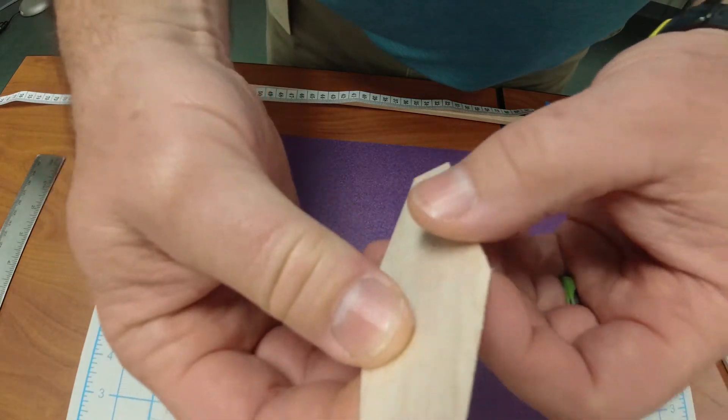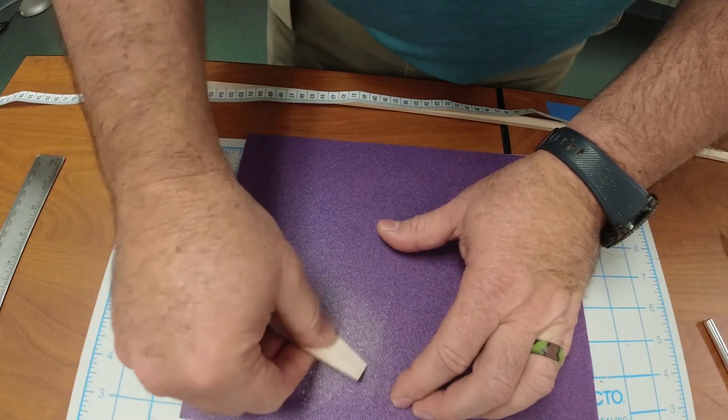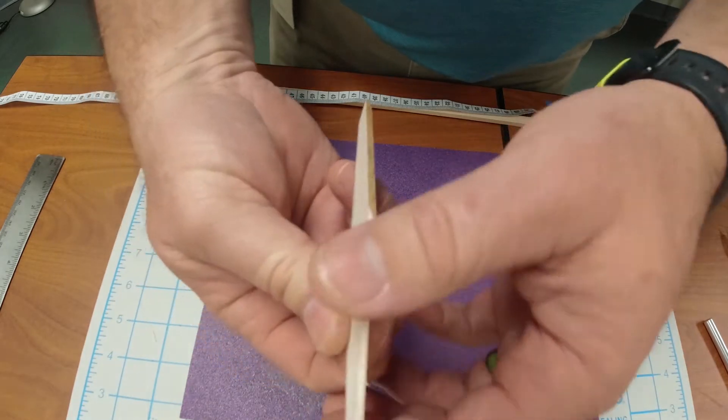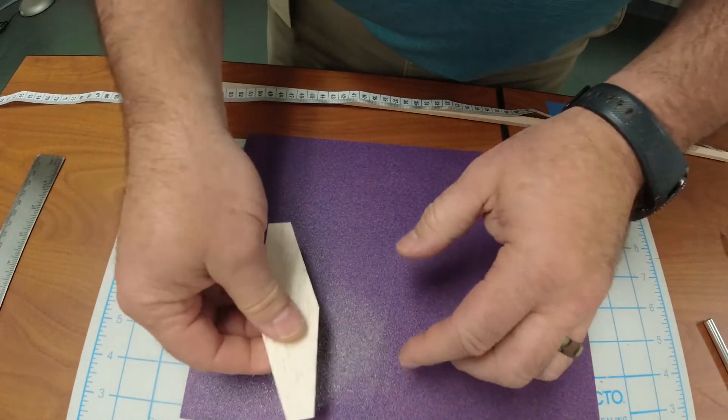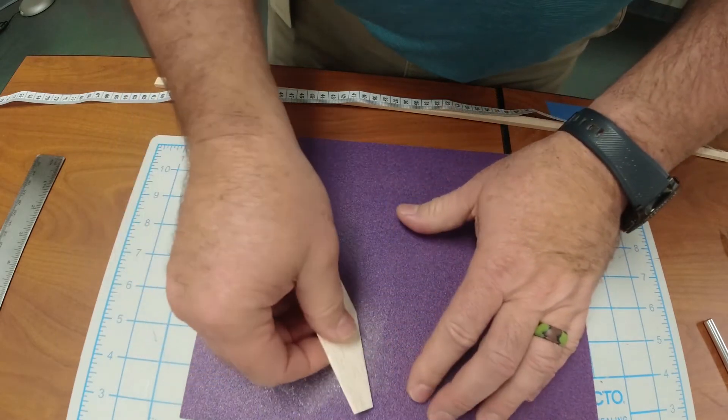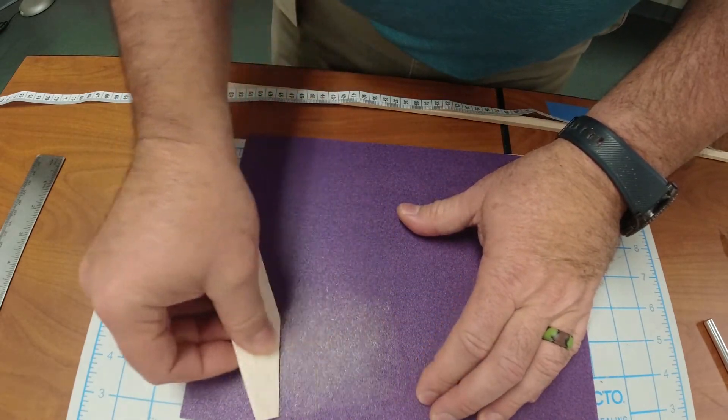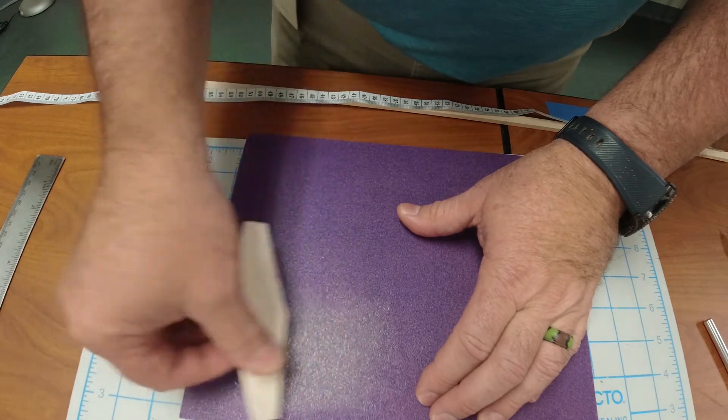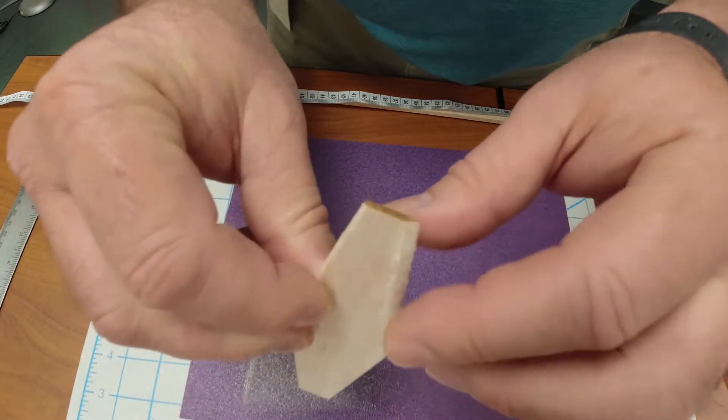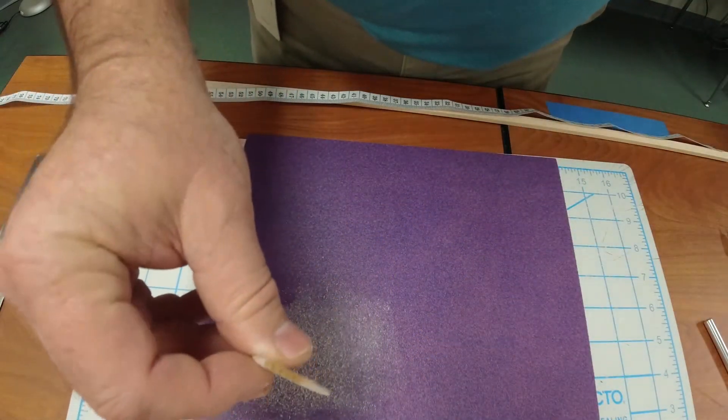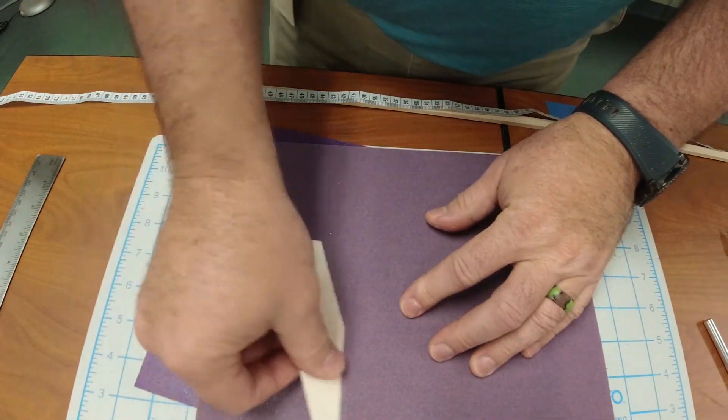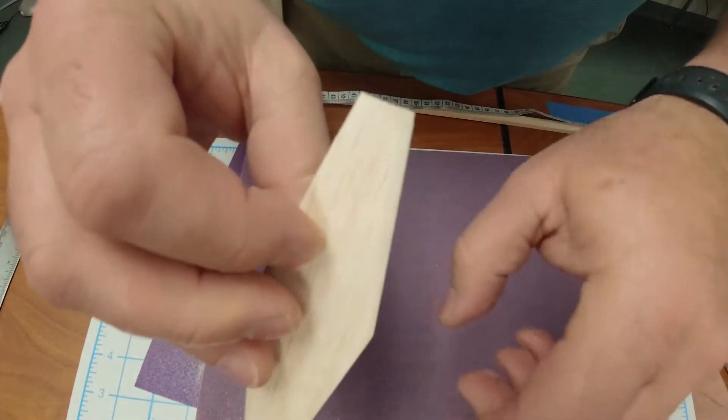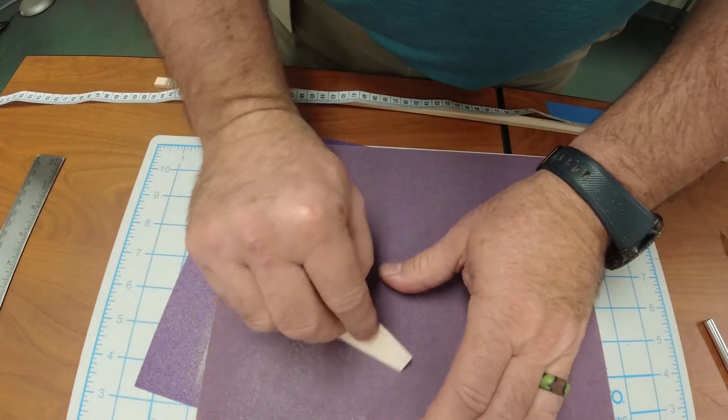You can see how my edge is getting rounded off. On the trailing edge you just want to taper it down. It helps to kind of pull, and we're just tapering down. Then you can take the fine sandpaper and just make that a little prettier so it's nice and smooth. Remember, it's an airfoil.